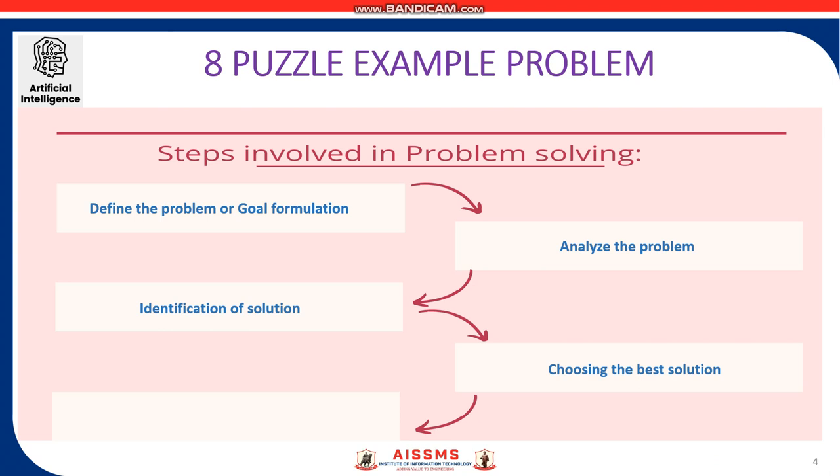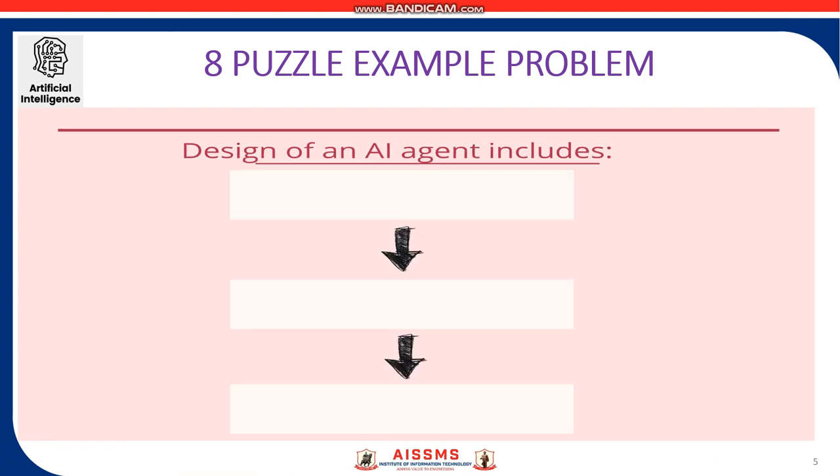A search algorithm takes a problem as the input and returns a solution in the form of an action sequence. The fifth step is implementation and reaching the goal state. Once a solution is found, the actions it recommends can be carried out. This is called the execution phase. Thus, we have a simple formulate, search, execute design for the agent.